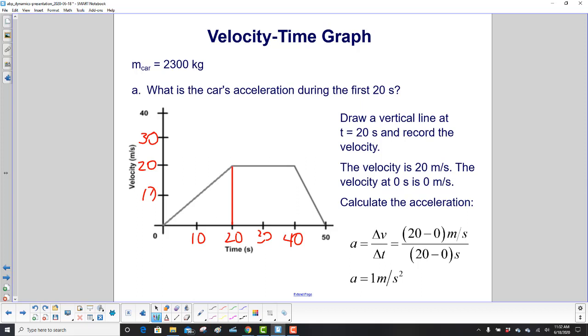What's the velocity at time 20? We have our little red line here, then we go across. I probably could have drawn a straight line, but it's 20.